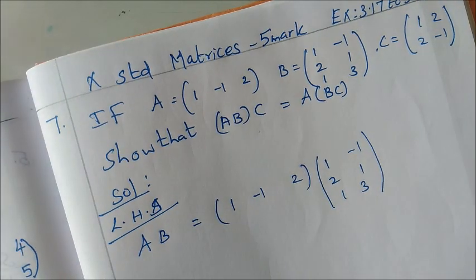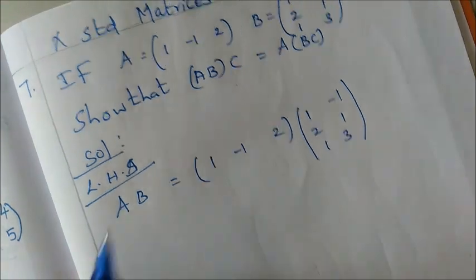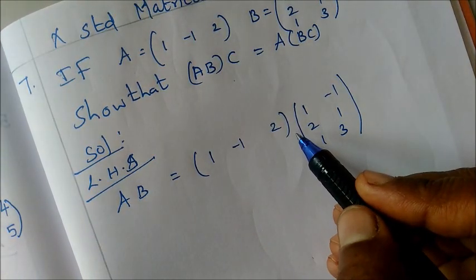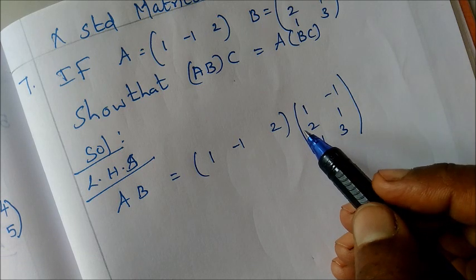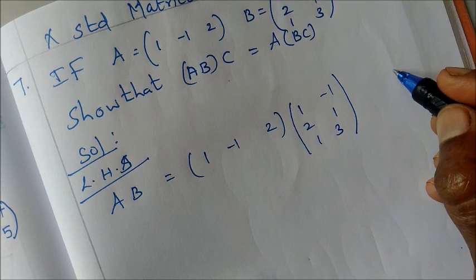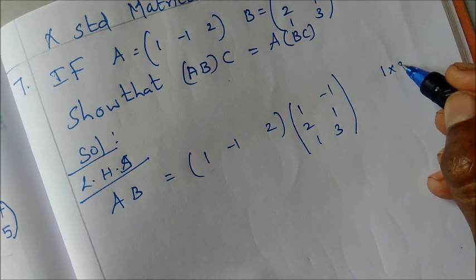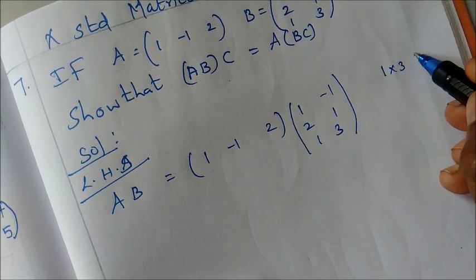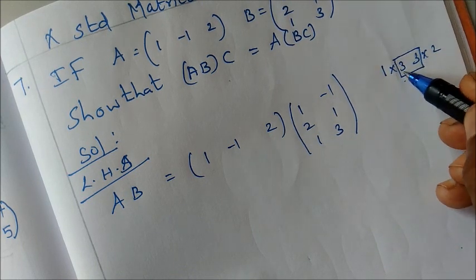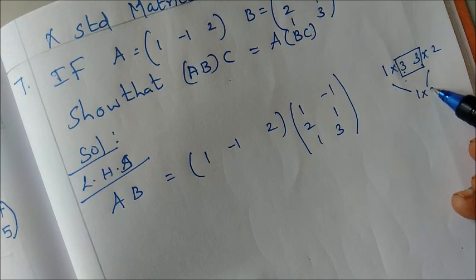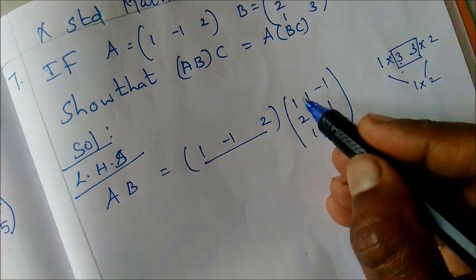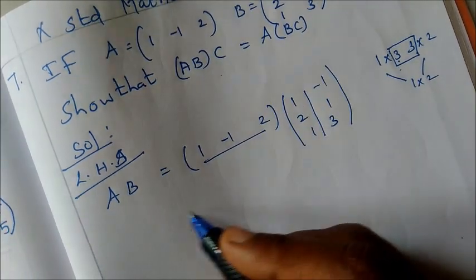We compute the left-hand side first, then the right-hand side, and verify they are equal. First, check if matrix multiplication is possible. For AB: A has order 1×3 and B has 3 rows, so the column and row counts match. The resulting matrix will be 1×2.